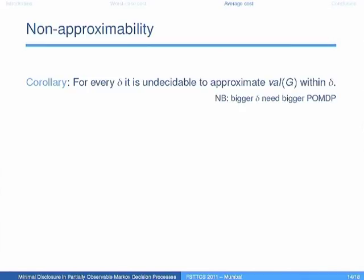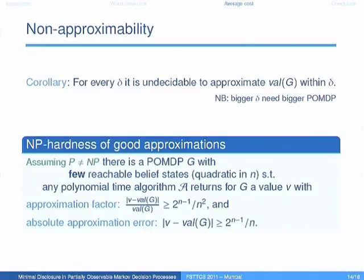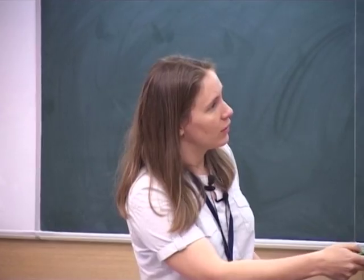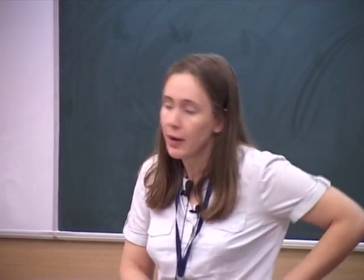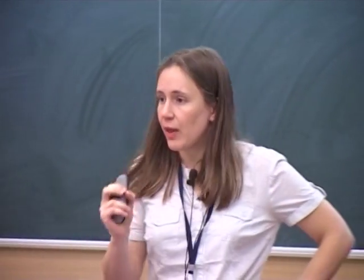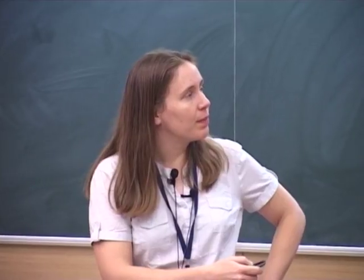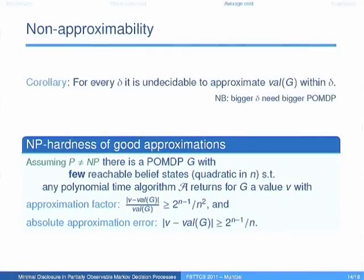We can show that obtaining good approximations is NP-hard, where good approximations means the state space of the game is relatively small — quadratic in some parameter n — and the reachable beliefs are also few, again quadratic in n. Yet the approximation factor is close to exponential in n. The key point is that even with few reachable belief states, the approximation error can be large. This statement holds assuming P ≠ NP.